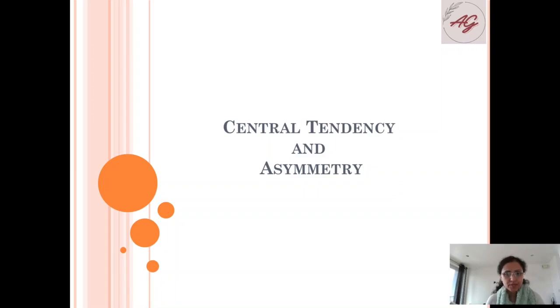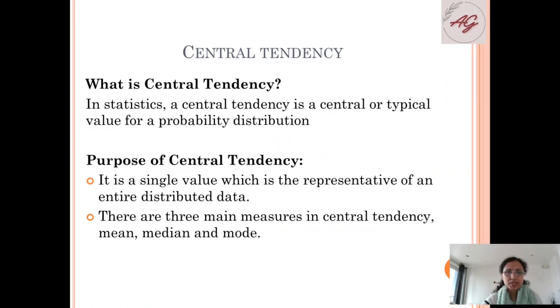So today we will understand what is central tendency and asymmetry. What is central tendency? In statistics, a central tendency is a central or typical value for a probability distribution. We have data in a distributed format and it is a central value. The purpose of central tendency is a single value which is the representative of an entire distributed data.